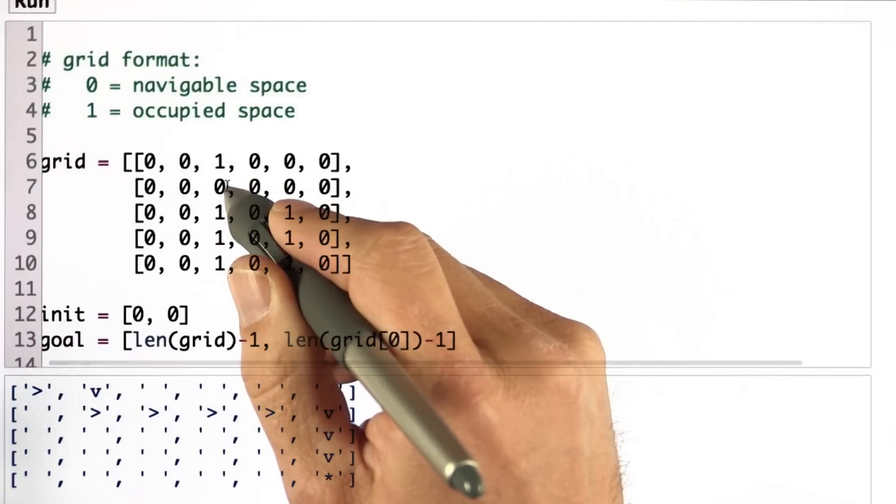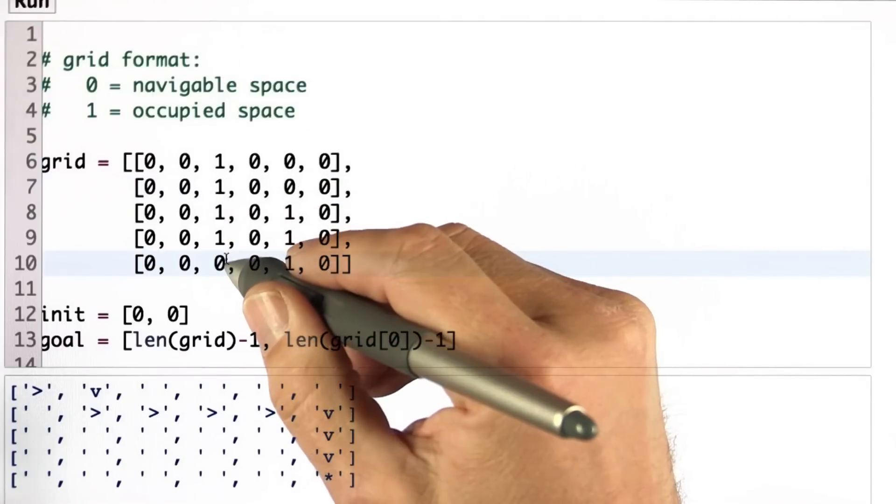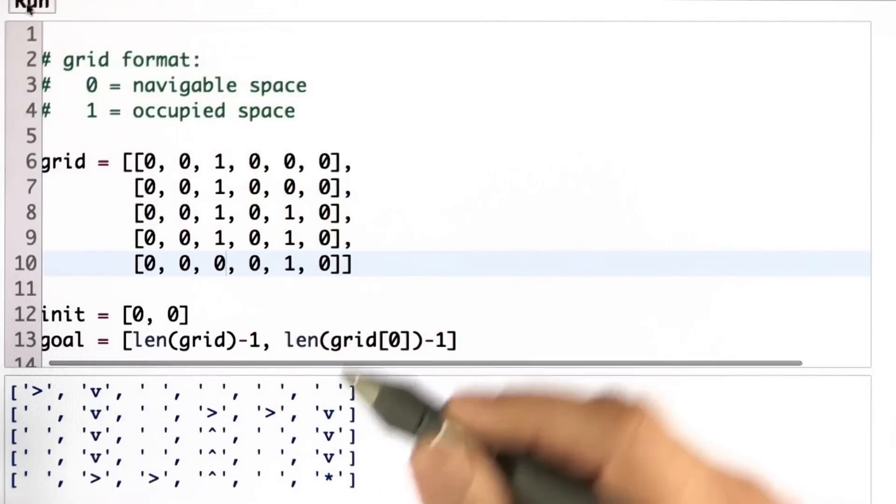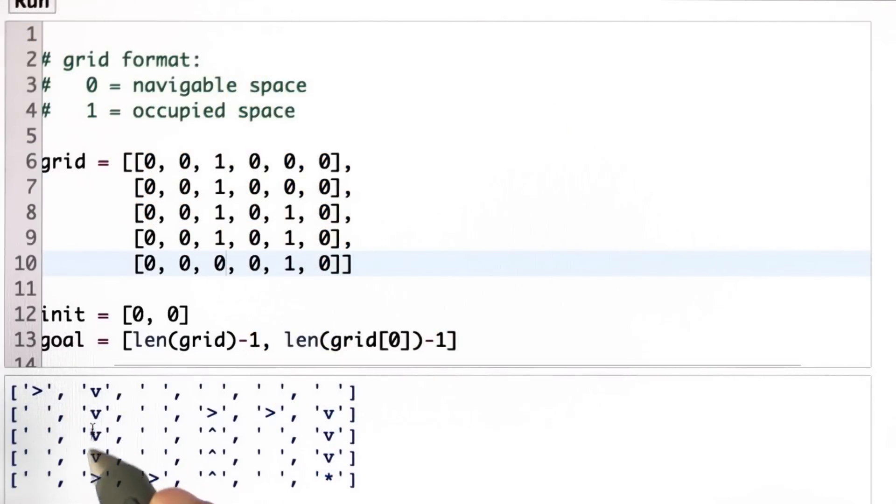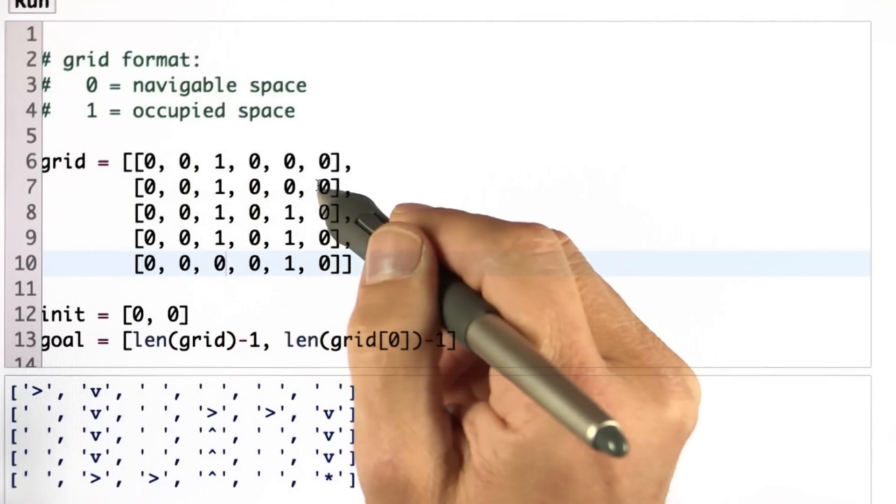Let me modify the maze. I'm closing up the wall over here, opening the wall over here, run it. Here is my policy. And you can see in the grid this is the only way to make it to the goal.